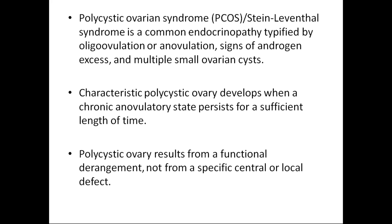Polycystic ovarian syndrome is a common endocrinopathy characterized by oligo-ovulation or anovulation, signs of androgen excess, and multiple small ovarian cysts which can be picked up on imaging modalities like ultrasonography. The characteristic polycystic ovary usually develops only after a chronic anovulatory state persisting for a sufficient length of time. So when you see a polycystic morphology on ultrasound, don't conclude it is PCOS, as it may be functional without any specific defect.